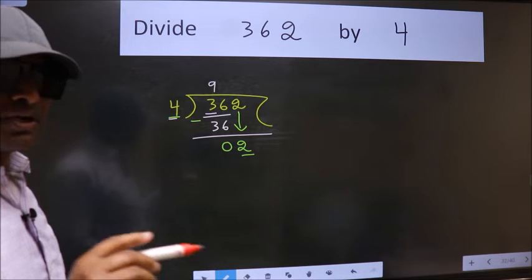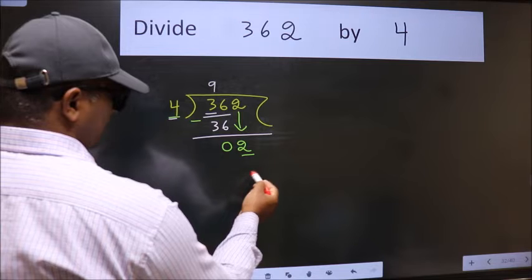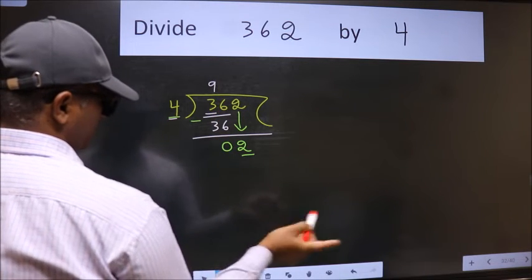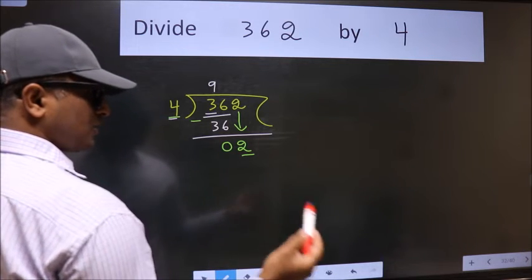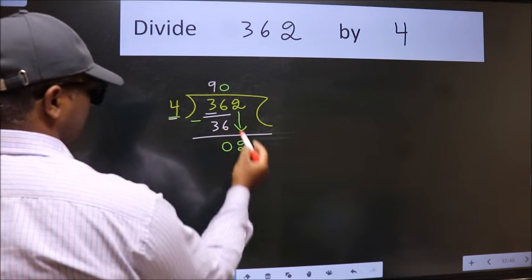Instead of that, what we should think of doing is, which number should we take here? If I take 1, we will get 4. But 4 is larger than 2. So what we do is we take 0 here. So 4 into 0, 0.